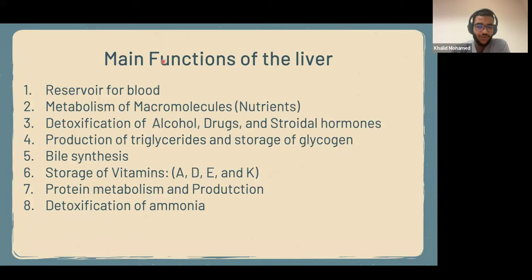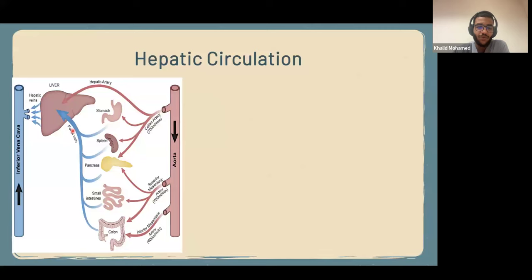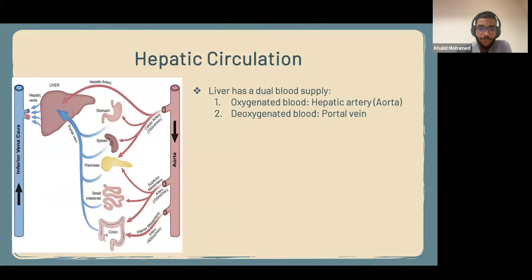Now let's discuss each function, starting with the reservoir of blood. The liver has dual circulation — it has two sources of blood: oxygenated blood from the hepatic artery, and blood coming from the portal venous system from all the GI organs. All the GI organs give out portal veins which join to form a big portal vein and then enter the liver. All of these join to form sinusoids and the sinusoids drain into the inferior vena cava.